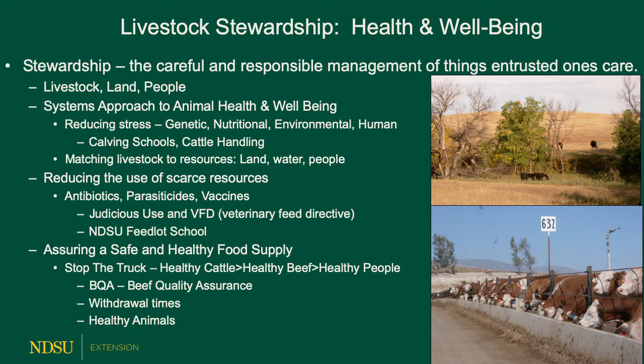We're working to connect that bridge between production and consumption. We're focused on animal health and animal well-being by incorporating a systems approach. This means looking at the impact of genetic selection on the environment, on nutrition, on animal handling, on vaccine use, that are used to improve animal health and animal well-being. While our focus is on animal health, sometimes illness occurs and treatment is necessary.